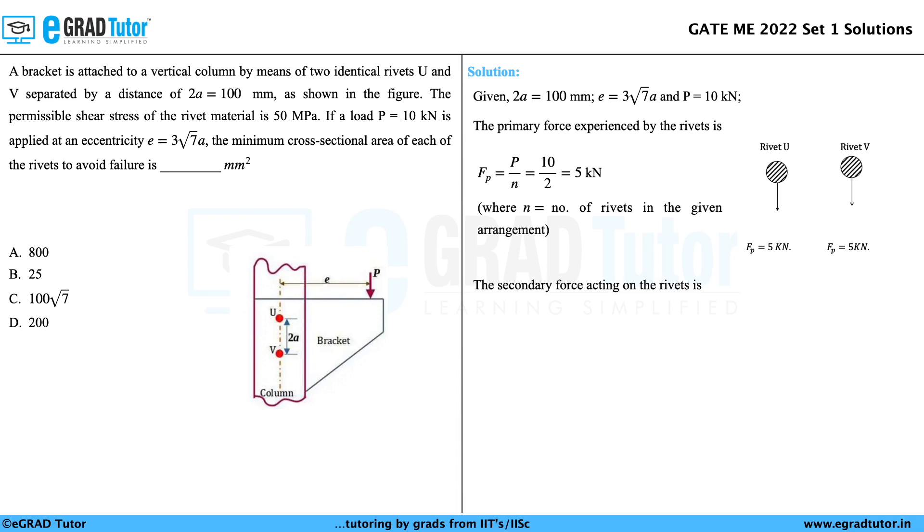The secondary force acting on the rivets is calculated as Fu = Fv = (P × E)/(2R). Substituting P = 10 kN × 3√7 × A/(2 × 50), where A = 50, this gives the secondary force as 39.68 kN. The arrangement of secondary forces acting on the rivets is shown in the figure.